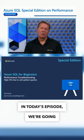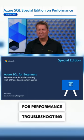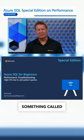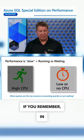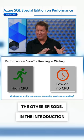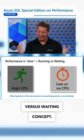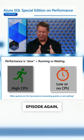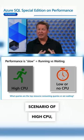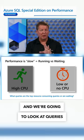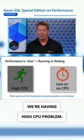In today's episode, we're going to focus on another scenario for performance troubleshooting dealing with high CPU on something called an anti-pattern query. If you remember from the last episode, in the introduction, we talked about this running versus waiting concept. Today we're going to focus on the running scenario of high CPU, and we're going to look at queries that affect and show why we're having a high CPU problem.